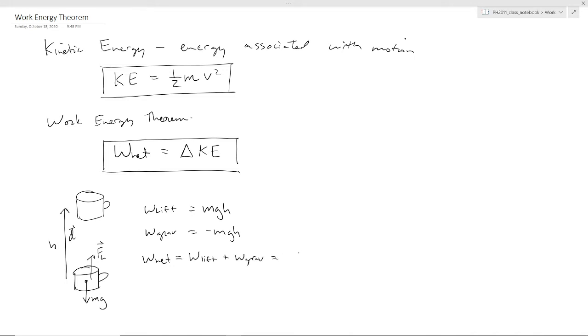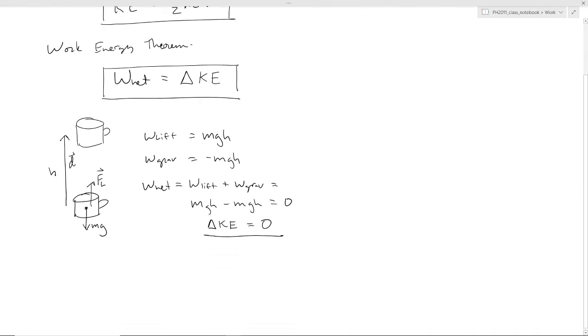So in this situation, it's mgh minus mgh equals zero. So in this case the change in kinetic energy when lifting this object is zero. So this is kind of a boring example.